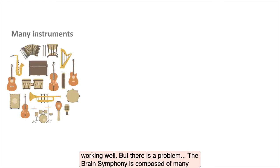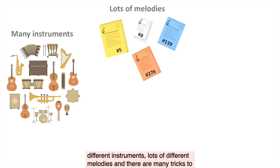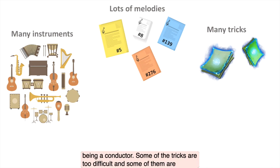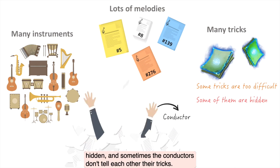But there is a problem. The brain symphony is composed of many different instruments, lots of different melodies, and there are many tricks to being a conductor. Some of the tricks are too difficult, and some of them are hidden. And sometimes the conductors don't tell each other their tricks.